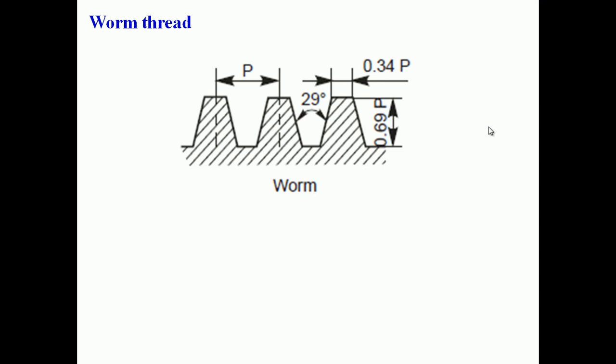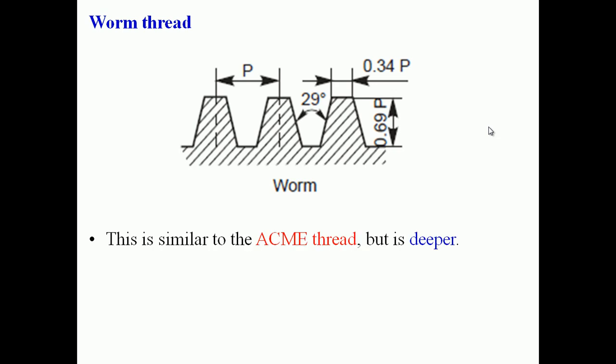The worm thread is similar to the acme thread but has a greater depth of 0.69 times the pitch. It is used on shafts to carry power to worm wheels, which is why it is called a worm thread.